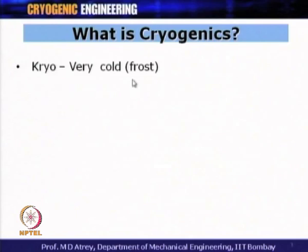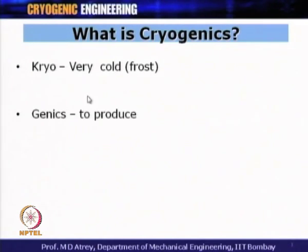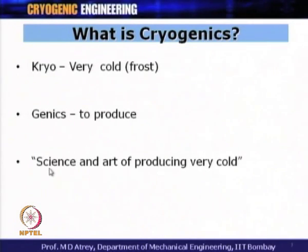What is cryogenics? The word 'cryo' means very cold — as cold as icy — and although cryogenics means very low temperature, the name originates from 'as cold as ice.' 'Genics' means to produce. So basically, cryogenics is the science and art of producing very low temperatures, which is a definition that holds both historically and today.